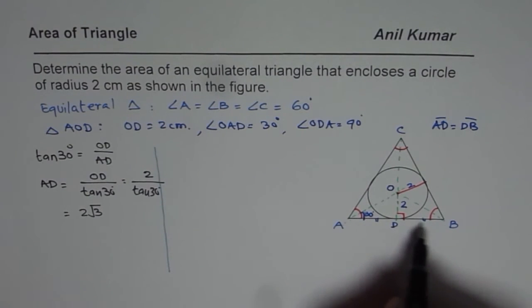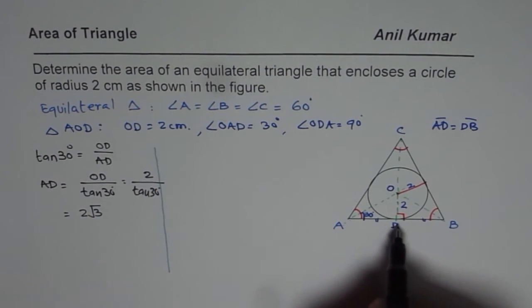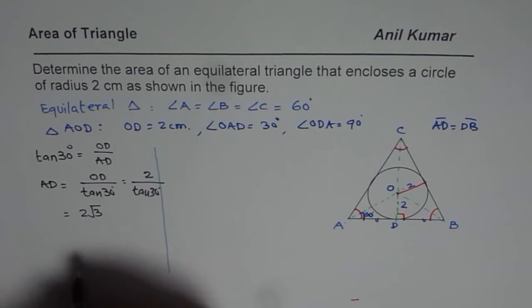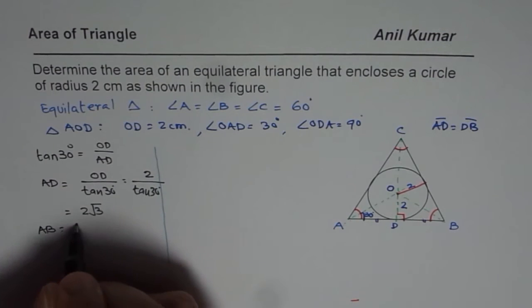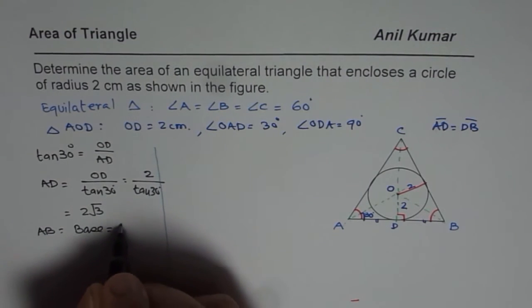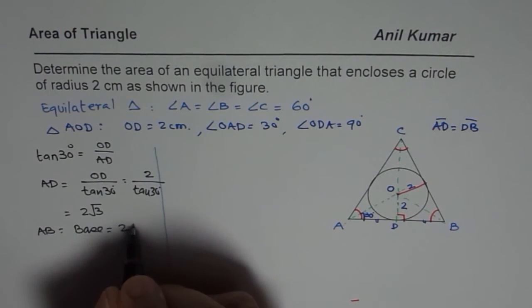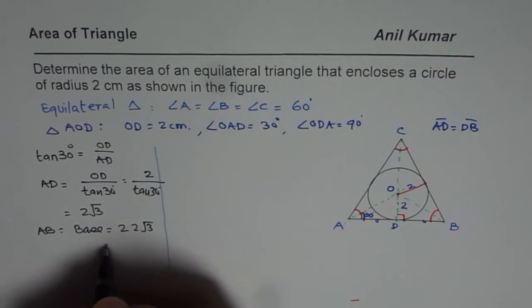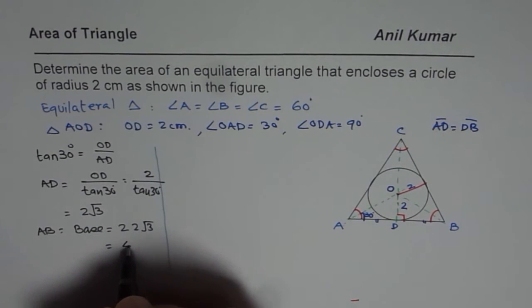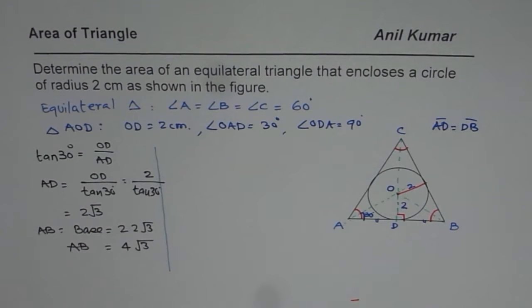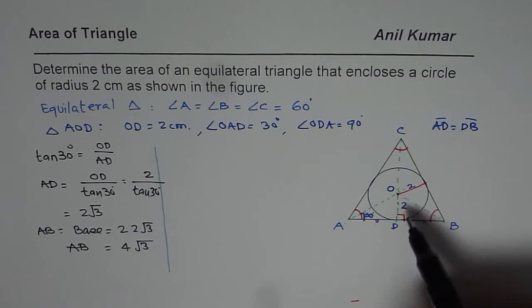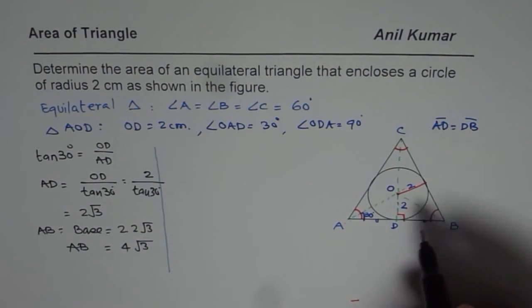Since AD is half of the base AB, we can write AB = 2 × 2√3 = 4√3. Now to find the area, we also need to find the height CD.